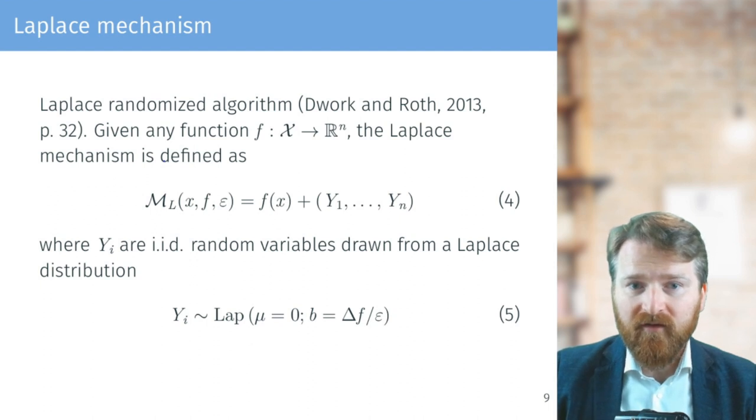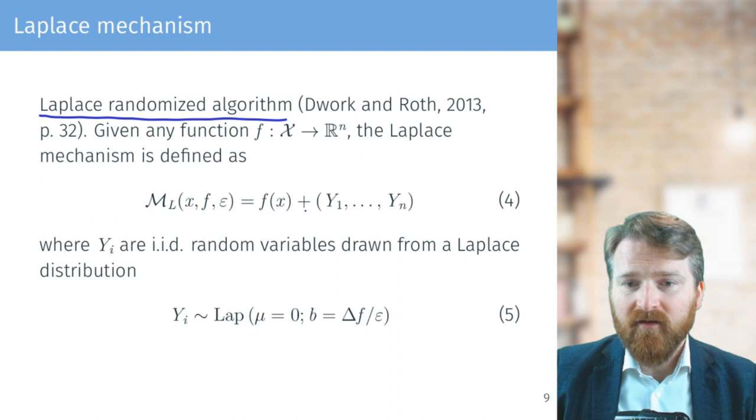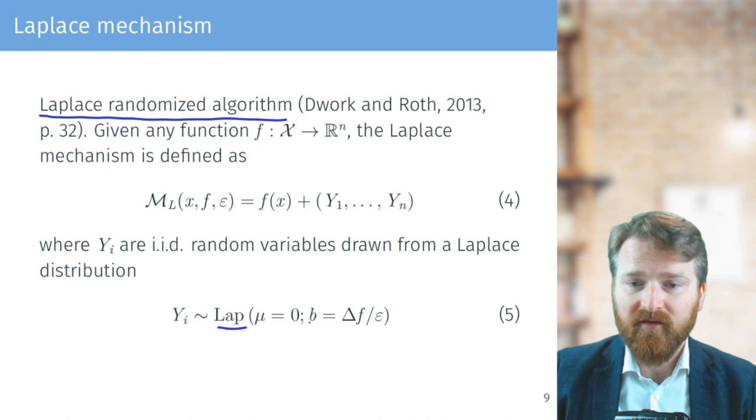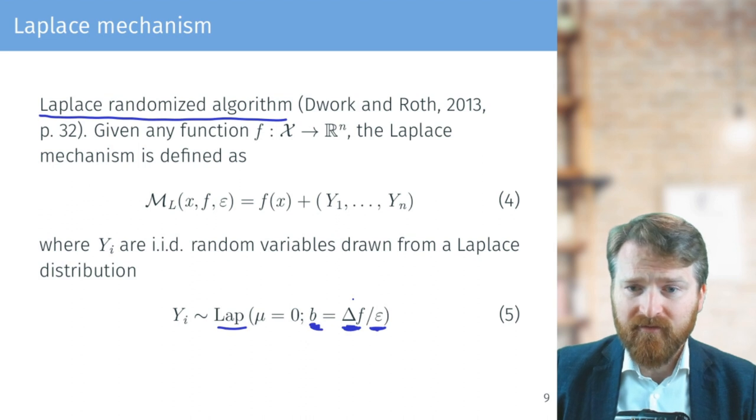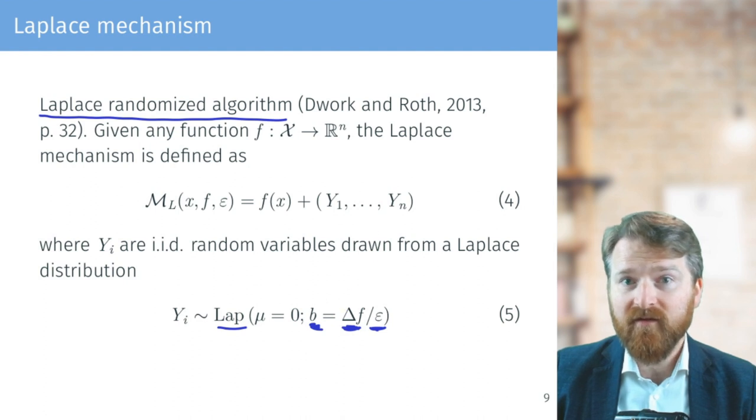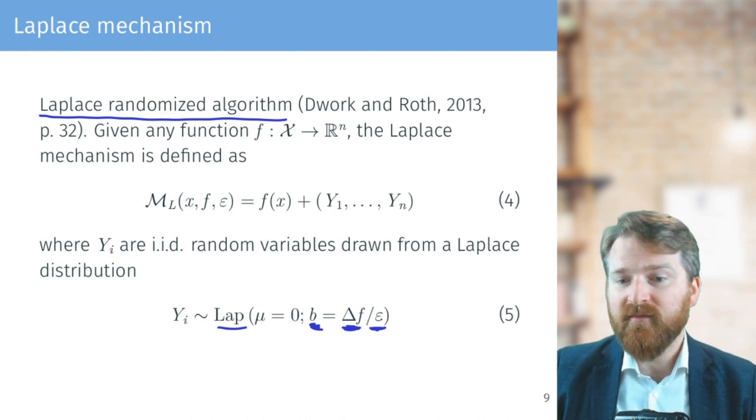Because here, when we finally define the Laplace randomized algorithm, we are saying that for each of the dimensions, we're drawing a Laplace distribution centered around the point, and the scale of the Laplace is proportional to the sensitivity of the function and also proportional to the privacy budget. So naively, the larger the privacy budget, the more noise we have to add—excuse me, the smaller the epsilon, the larger noise—and the larger sensitivity, the larger scale.